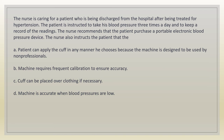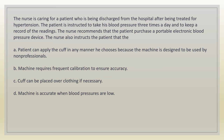The nurse is caring for a patient being discharged after treatment for hypertension. The patient is instructed to take his blood pressure three times a day and the nurse recommends purchasing a portable electronic blood pressure device. The nurse instructs the patient that the: A. patient can apply the cuff in any manner because the machine is designed for non-professionals. B. machine requires frequent calibration to ensure accuracy. C. cuff can be placed over clothing if necessary. D. machine is accurate when blood pressures are low. Answer: B. The machine requires frequent calibration to ensure accuracy.